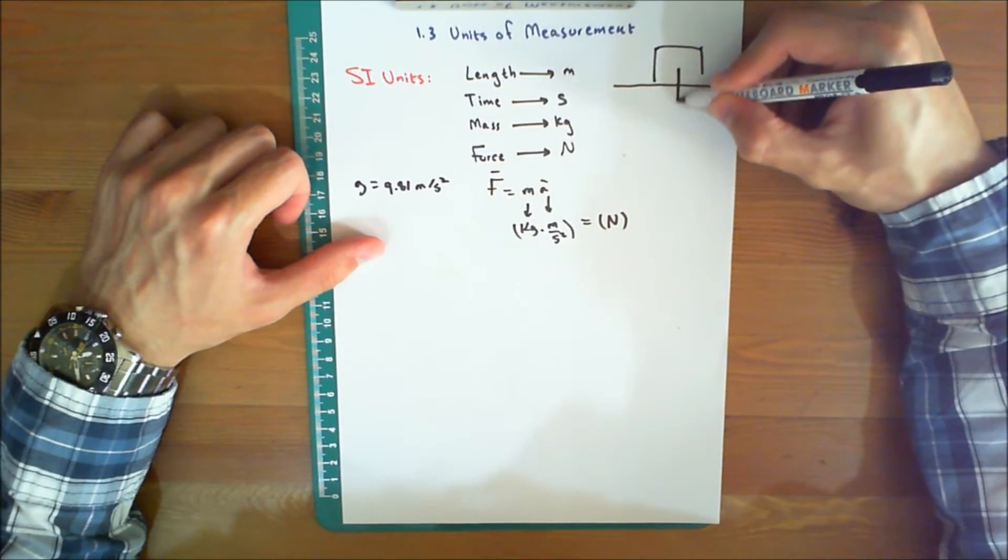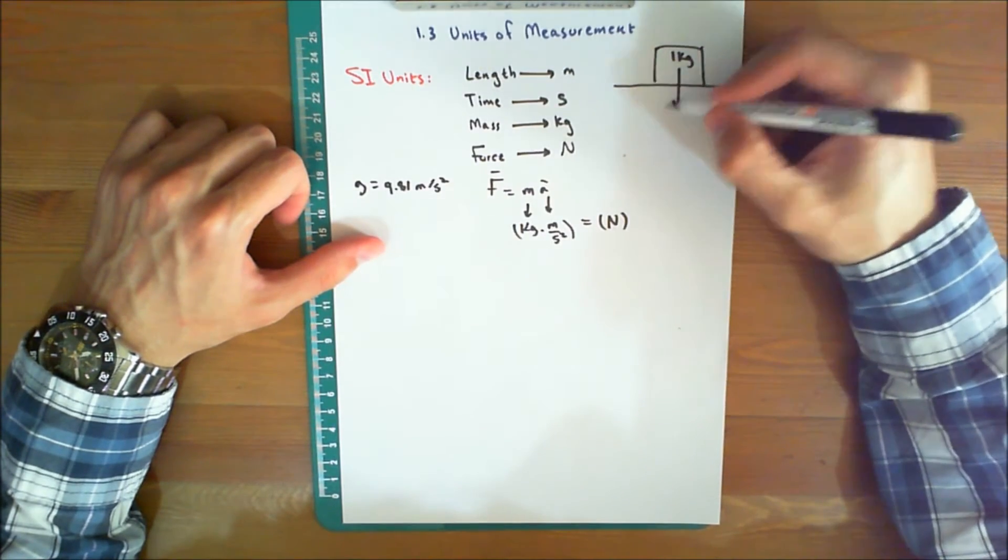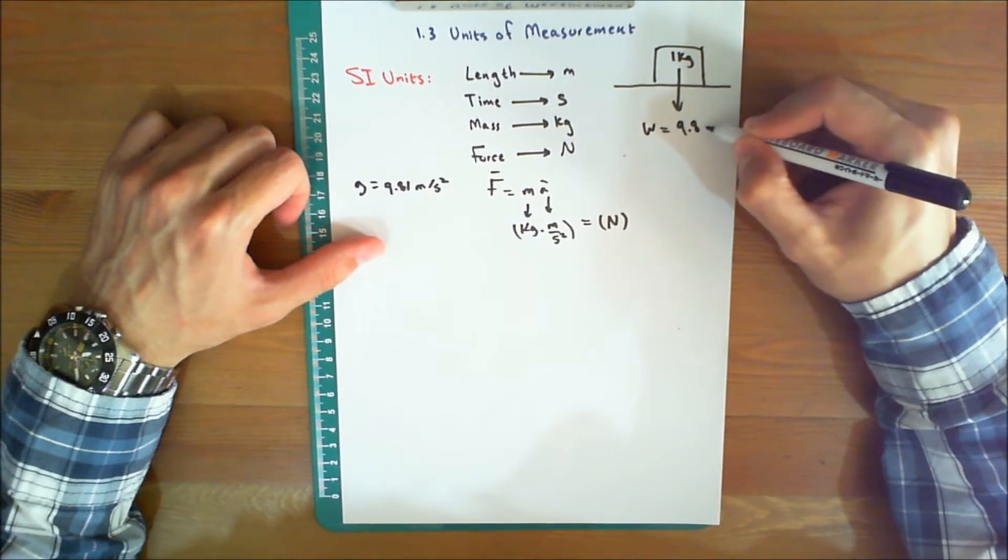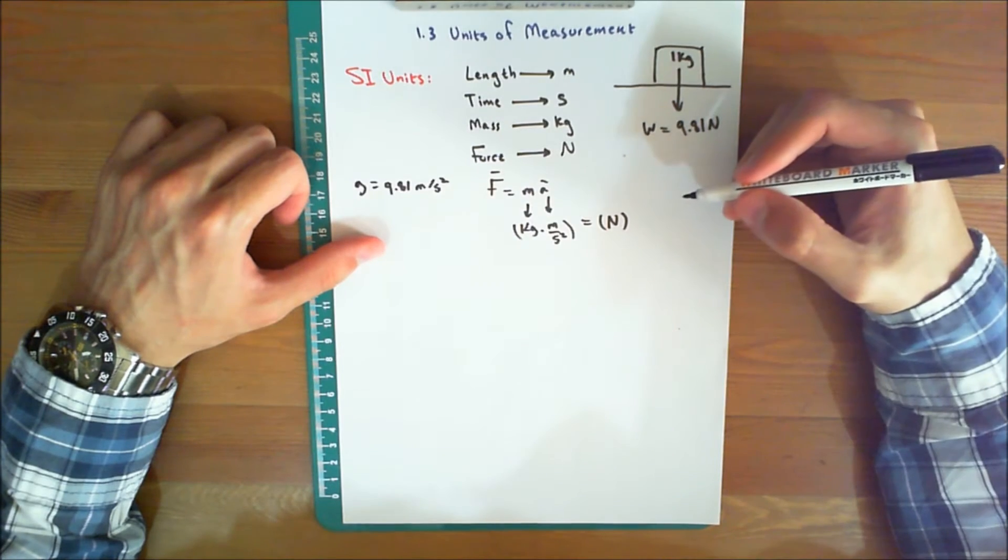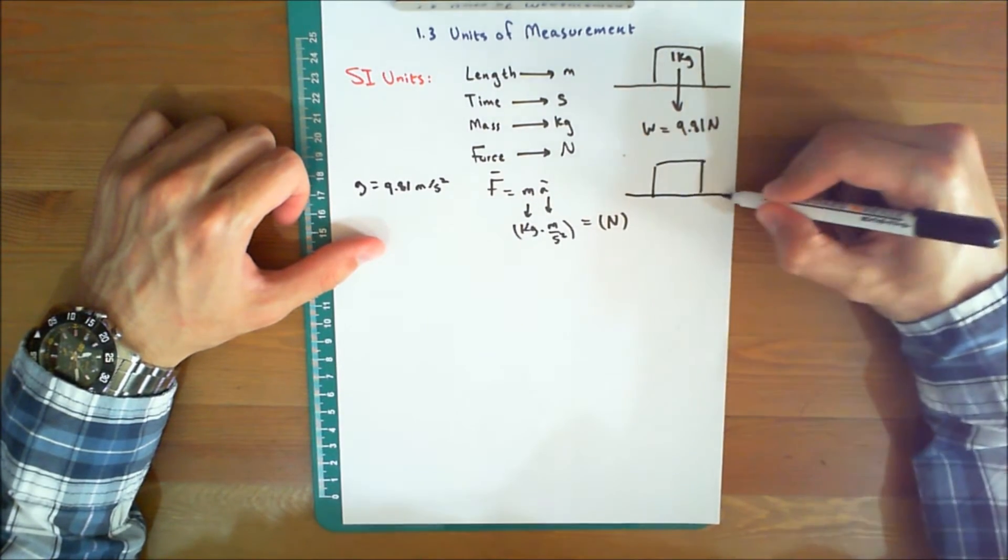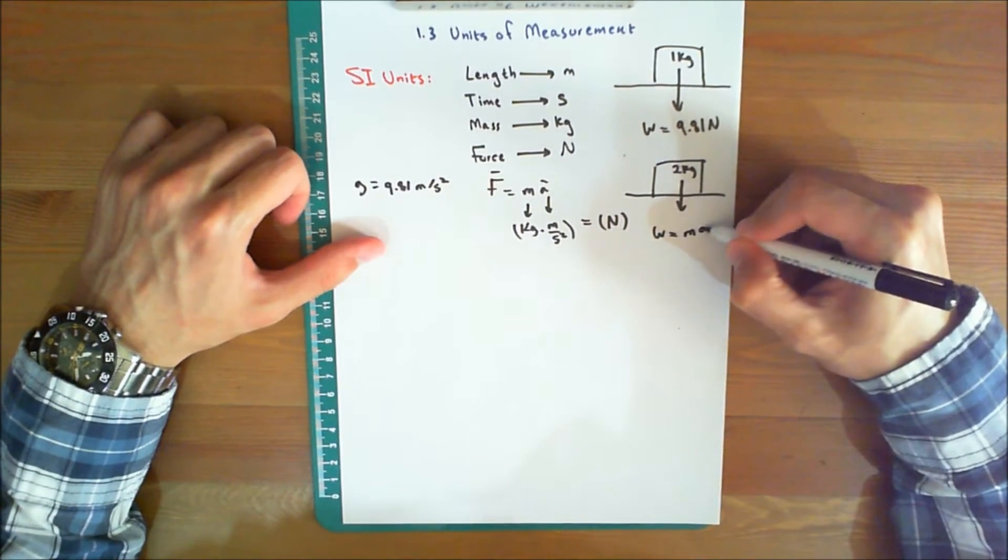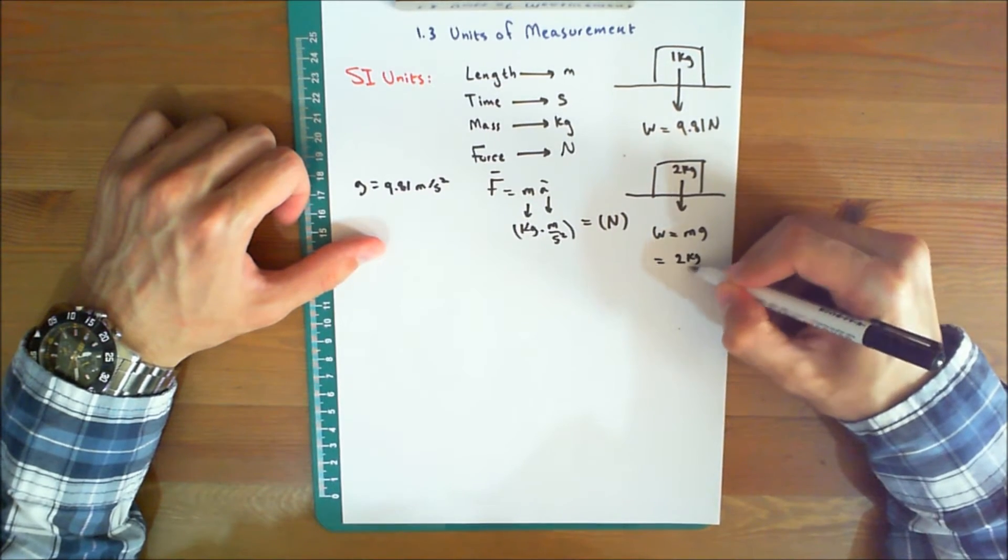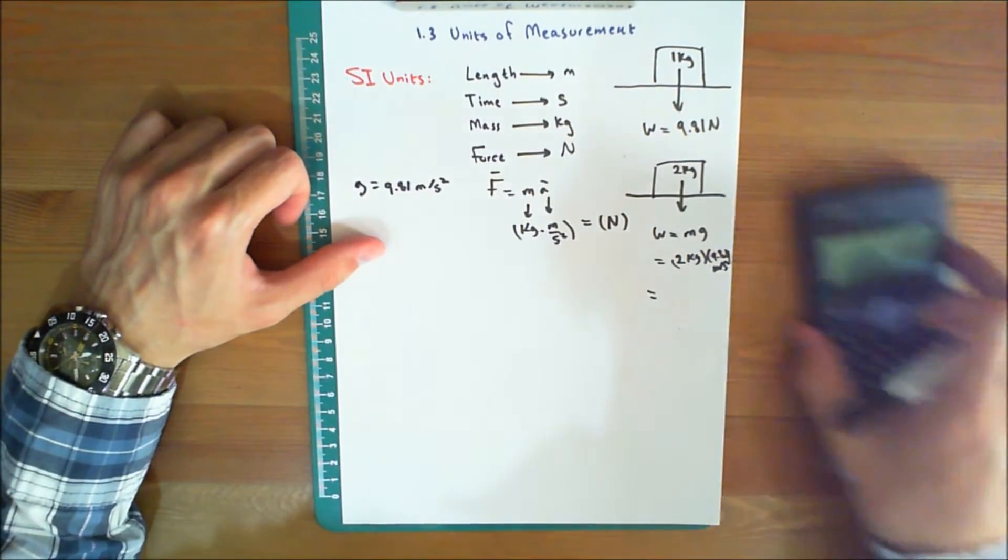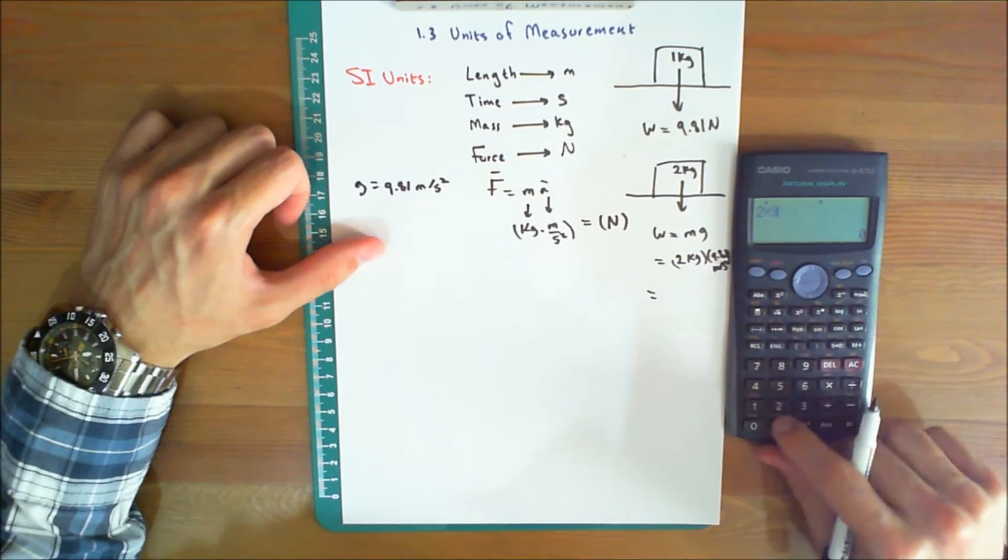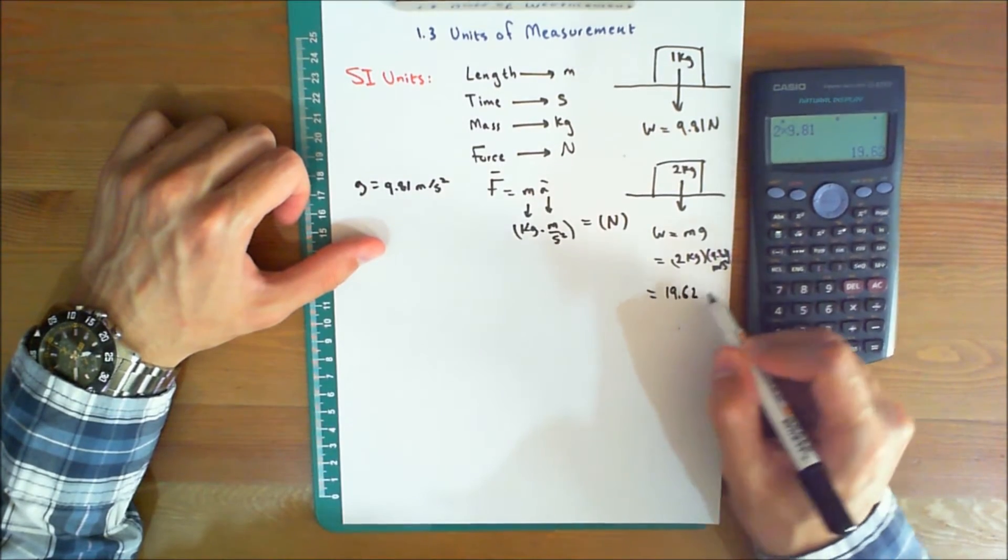So, if you have a body with a mass of one kilogram, it would have a weight of 9.81 newtons. Whereas, a 2 kilogram body weighs, W equals mg, so it equals 2 kilograms times 9.81 meter per second squared, and that would give us 19.62 newtons.